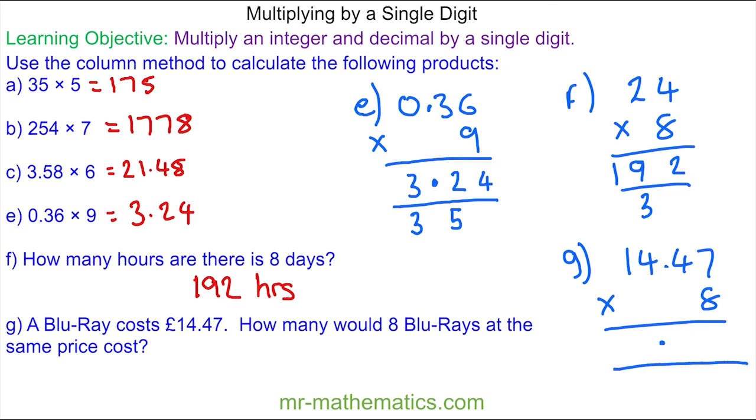7 times 8 is 56. 5 tenths, 6 hundredths. 4 times 8 is 32. Add the 5 is 37. So 3 units and 7 tenths.